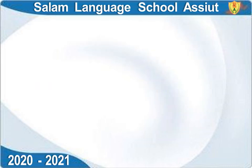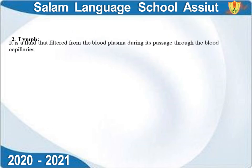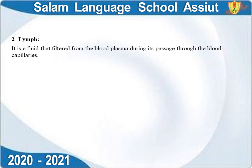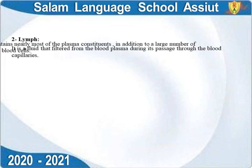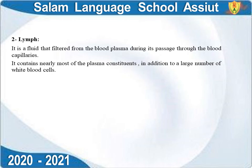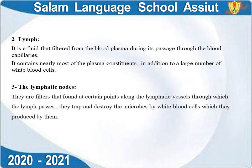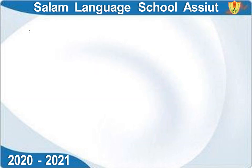Lymph is a fluid filtered from the blood plasma during its passage through the blood capillaries. It consists of most blood constituents along with a large number of white blood cells. Lymph nodes are found at certain points along the lymphatic vessels through which lymph passes. Lymph nodes trap and destroy microbes using white blood cells that they produce.